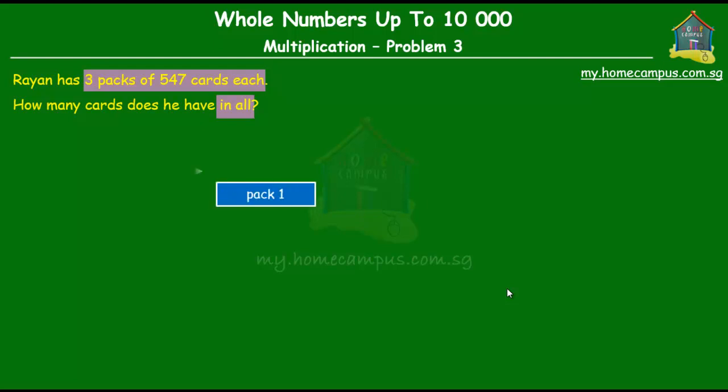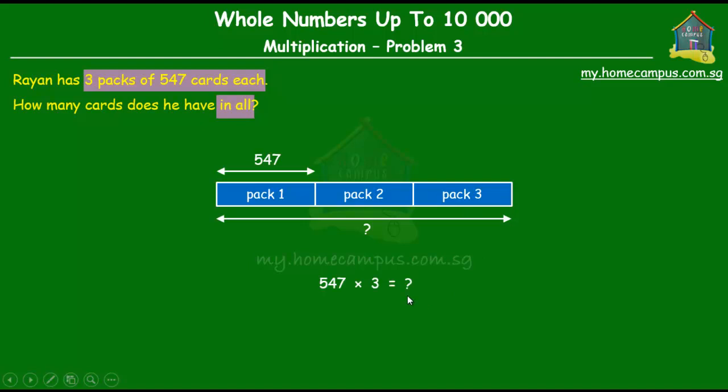One pack has 547 cards. So how many will three packs have? Well, three packs will have all of these. And that would be equal to 547 plus 547 plus 547 or 547 times 3.